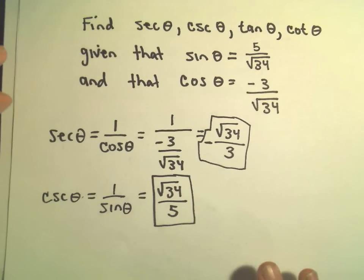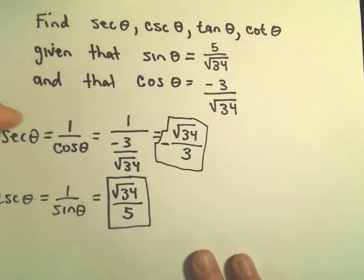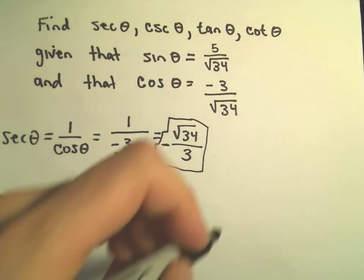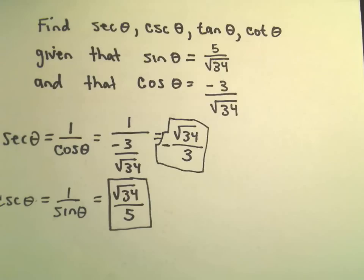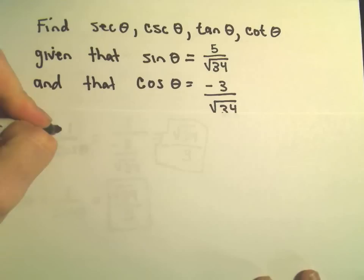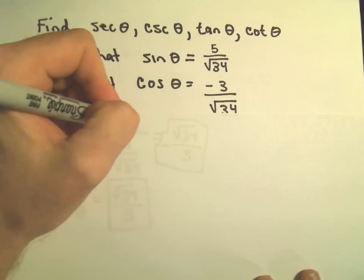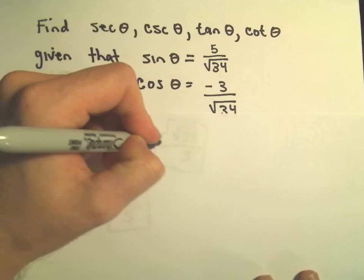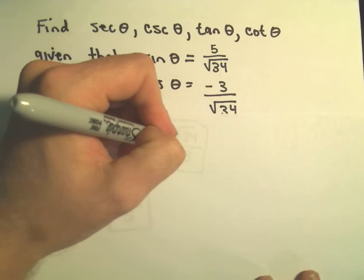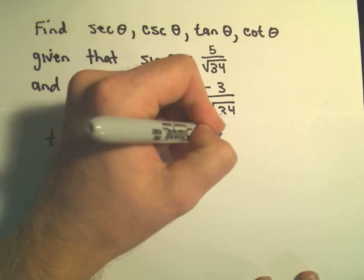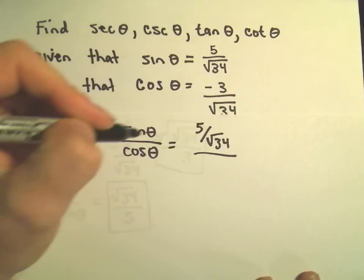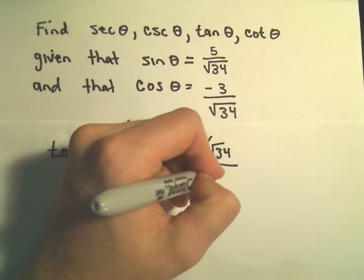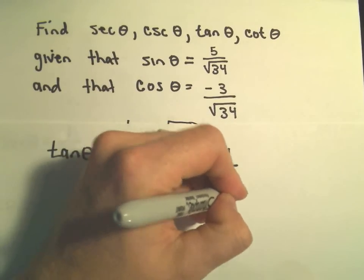To figure out tangent of θ, tangent of θ is just the ratio of sine to cosine. So tangent of θ is simply sine θ over cosine θ. Sine is 5/√34, and cosine is -3/√34.